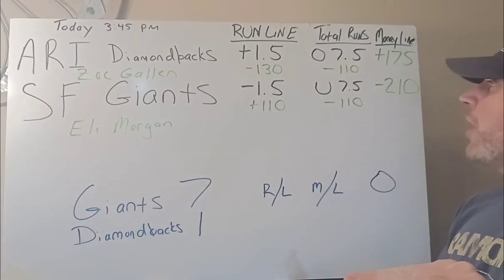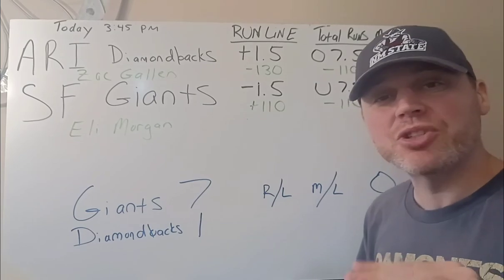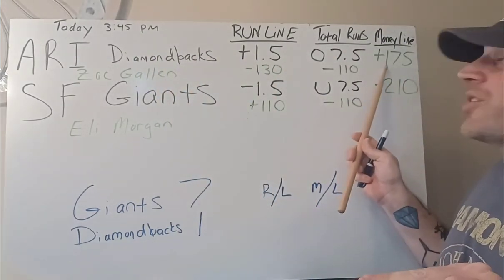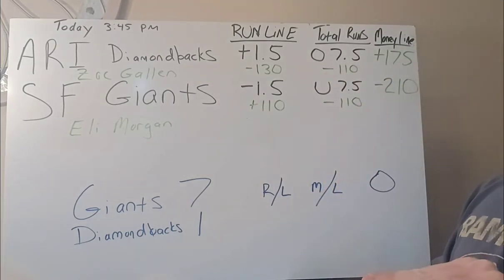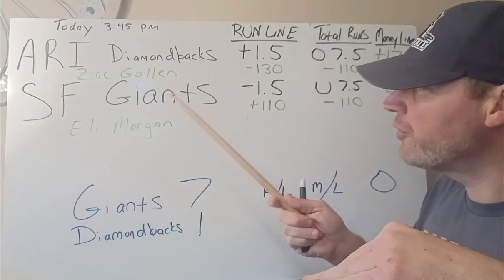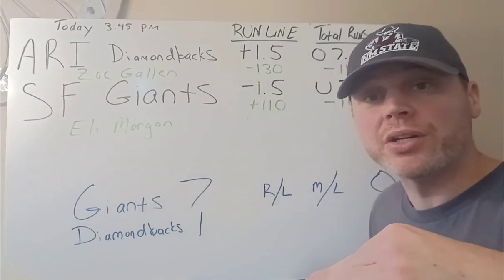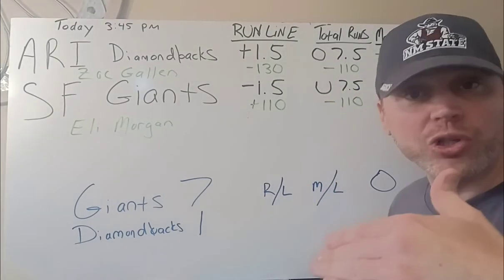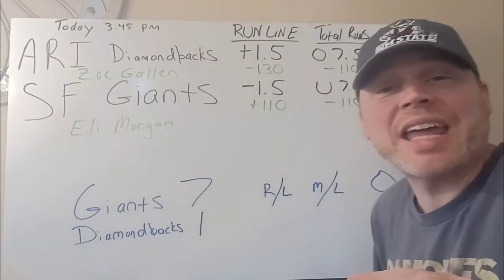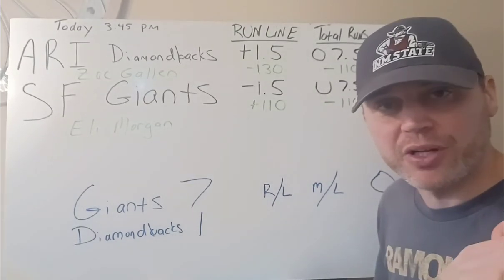Then you have the money line, which is also based on increments of a hundred just like the other odds. The money line means you're taking the team for a straight-up win without a margin of runs — they don't have to win by any amount. If you take the Diamondbacks on the money line, since they're the underdog, you're getting plus 175 on a hundred — you put up $100 and you're getting $175 back. Conversely, for the Giants as the favorite, you have to lay $210 for every $100 you want to win. So if you want to win $200 on the Giants, you have to put up $420. You just multiply it — if you want to bet $10, you've got to lay $21, and you're getting back the $21 plus $10, based on increments of a hundred.